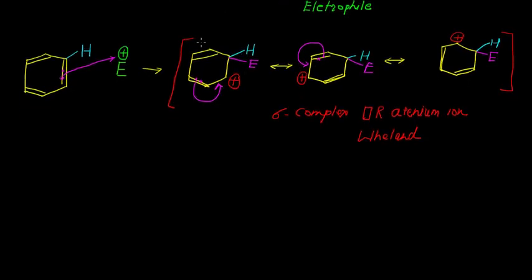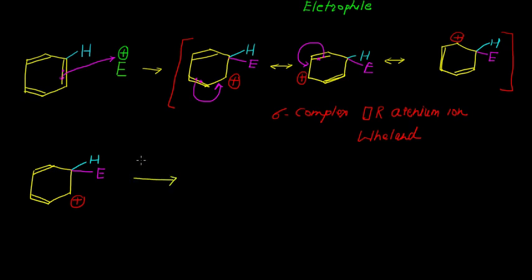In the last step, this particular intermediate will try to become more stable. It means that we need to aromatize this intermediate. The X catalyst which was generated in the first step plays an important role in this step, and it will absorb the proton which is present on this benzene ring.